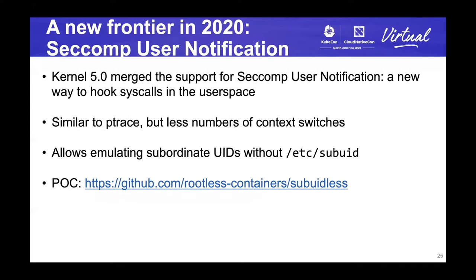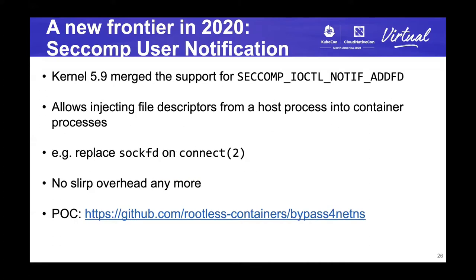The next topic is seccomp user notification, which was merged in kernel 5.0. It's a new way to hook system calls in user space. This is similar to ptrace, but it's significantly faster. This can be used for emulating subordinate UIDs without the /etc/subuid file. And kernel 5.9 added support for seccomp ioctl NOTIF_ADDFD, which allows injecting file descriptors from a host into containers. This can be used for eliminating the throughput overhead of slirp.